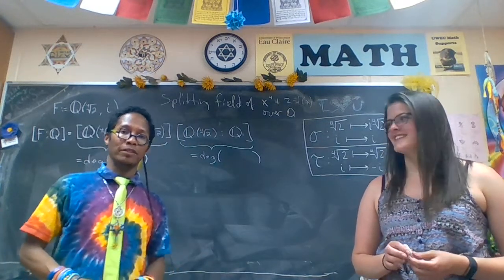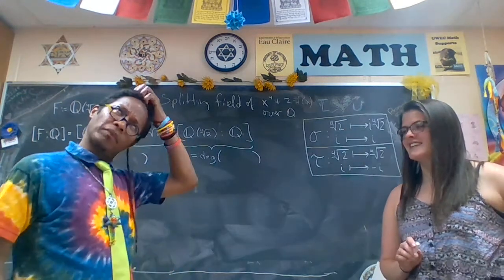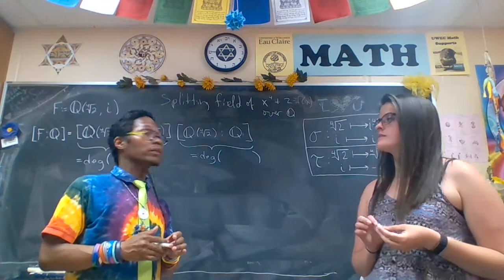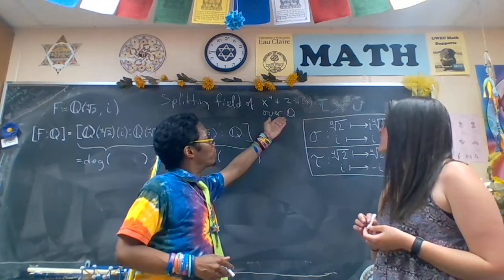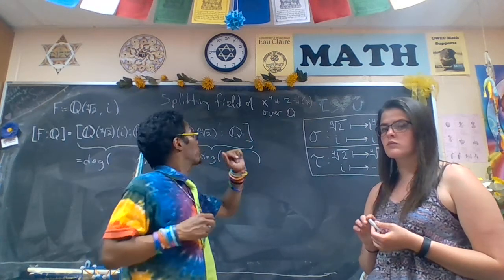Hi, I'm Mackenzie and I'm Abba. In part one, we found the splitting field of x to the fourth plus two over Q. And in this video, we're going to give the Galois group of this polynomial.